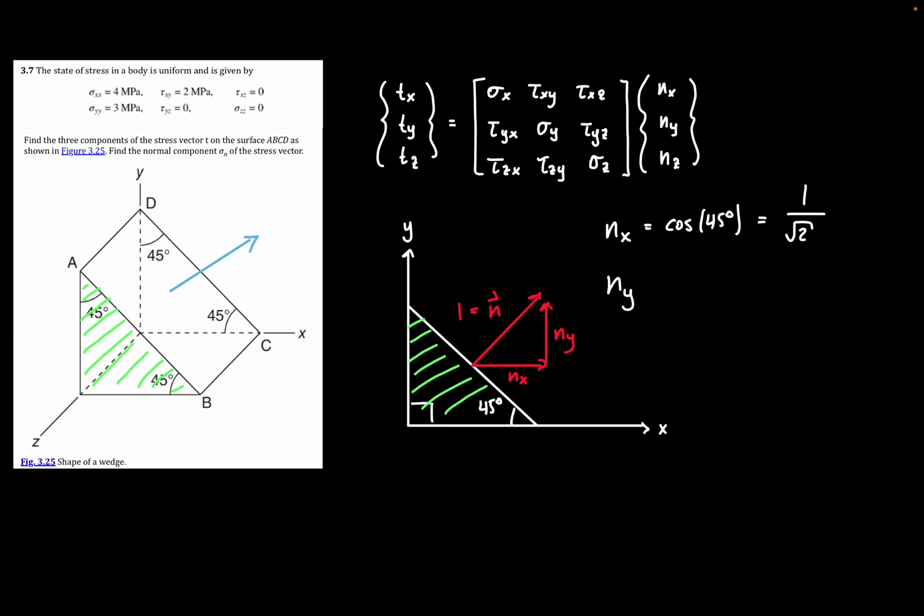So then we can write this as 1 divided by radical 2 for NX. And now for NY, it's going to be the same thing. So we'll have sine of 45 degrees, and that'll be equivalent as well to 1 divided by radical 2. So now we actually have our normal vector, not the one for the traction vector per se, but at least for that surface face.